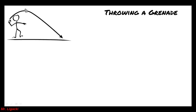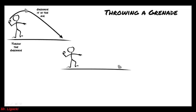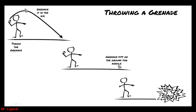First, we have our survivor who's going to throw the grenade. Then the grenade's going to be in the air for a while. Eventually the grenade's going to land on the ground and sit there for a little bit — it's not going to explode as soon as it hits the ground. After a few seconds, boom, our grenade blows up. So I need to take these actions and organize them into the right classes.